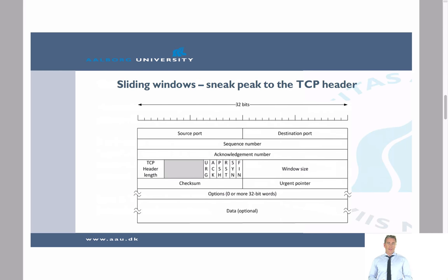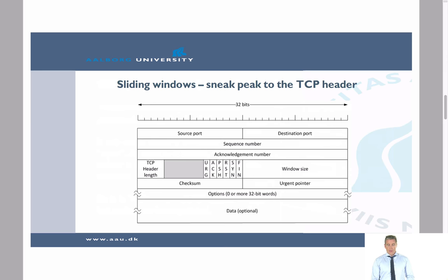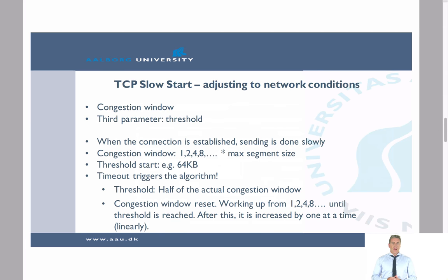Looking at the TCP header, you can see the window size is represented by 16 bits included in the header. You can also see the SYN and ACK bits discussed previously. That covers flow control when the receiver side is the limiting factor.